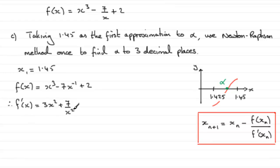So all we now need to do to get x2 is to say that therefore x2 equals x1, so that's 1.45 minus, and then f of 1.45 is going to be 1.45 all cubed minus 7 divided by 1.45 plus 2.